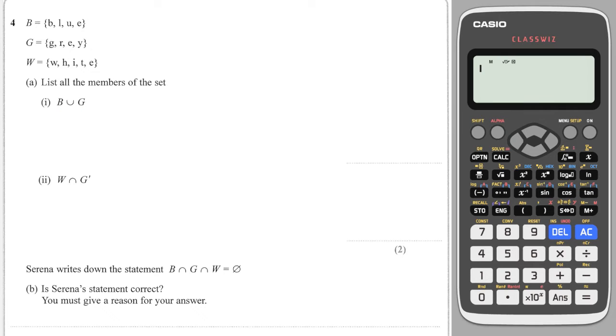Okay, we are asked to work out the union of B and G. So that means any letter which is in B or in G. So there's going to be loads. The union is very inclusive. So we're going to have B, L, U and E. And we're also going to have G, R, E and Y. But we're not going to write E twice because it's already occurred. So we're just going to write it like this.